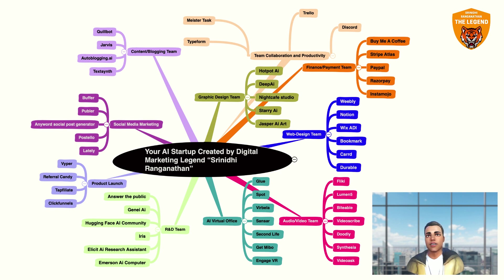You should also have an RNG team in-house, using AI tools like Answer the Public, Deny AI, Hugging Face AI Community, Iris, Ellicent AI Research Assistant, and Emerson AI Computer. You can answer any query very fast — that's your RNG team. So now you have your AI virtual office, your product launch checklist, your RNG team, your audio video team, and your social media marketing team.